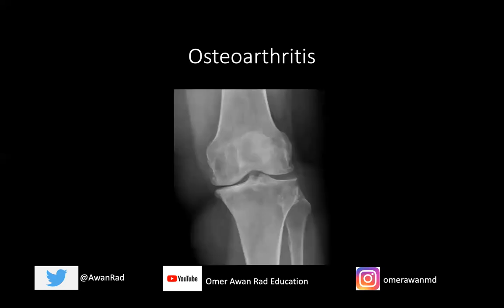I want to show you what a classic radiograph in the knee looks like in osteoarthritis. I want to focus first on the more normal lateral femorotibial compartment of the knee. So this is the lateral femoral condyle, this is the lateral tibial plateau — notice that the joint space is more or less preserved, we don't see osteophytes, we don't see any proliferation of bone. This looks like more or less a normal joint space.